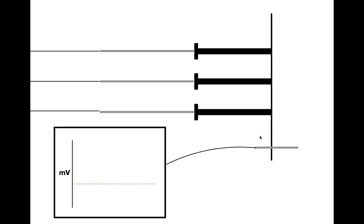In experiment number two, we're going to look at what spatial summation is. This is a very similar setup to the temporal summation experiment. However, in this case, we're looking at three different dendrites — dendrite one, dendrite two, and dendrite three. Each of these dendrites is connected to a different electrode: electrode one, electrode two, and electrode three. This vertical line symbolizes the cell body of the neuron. Implanted into the cell body is a voltage sensor connected to a monitor. At time zero, the cell is at rest at around negative 70 millivolts.